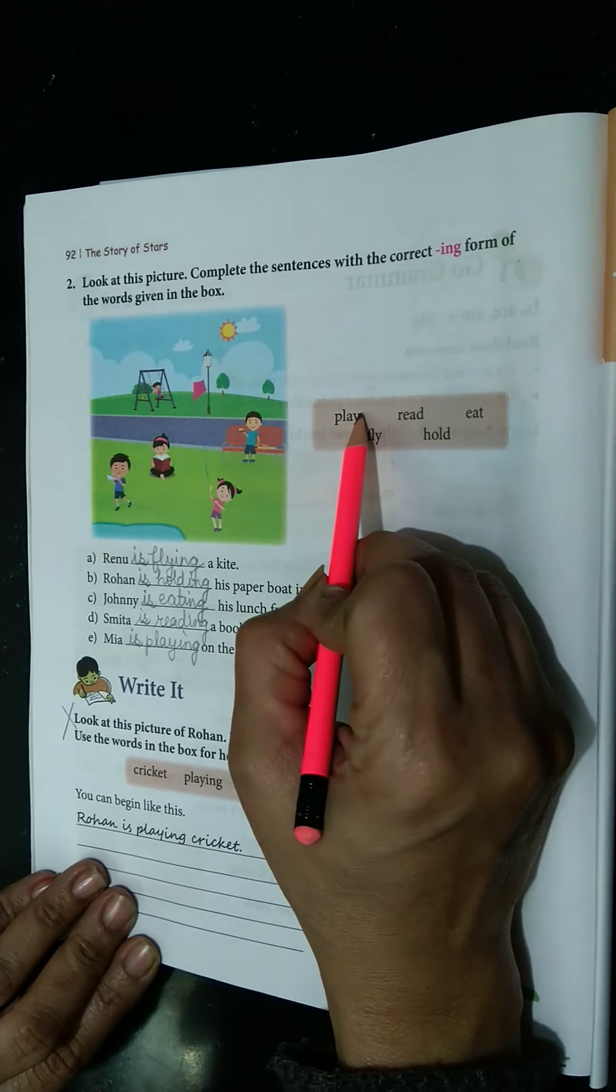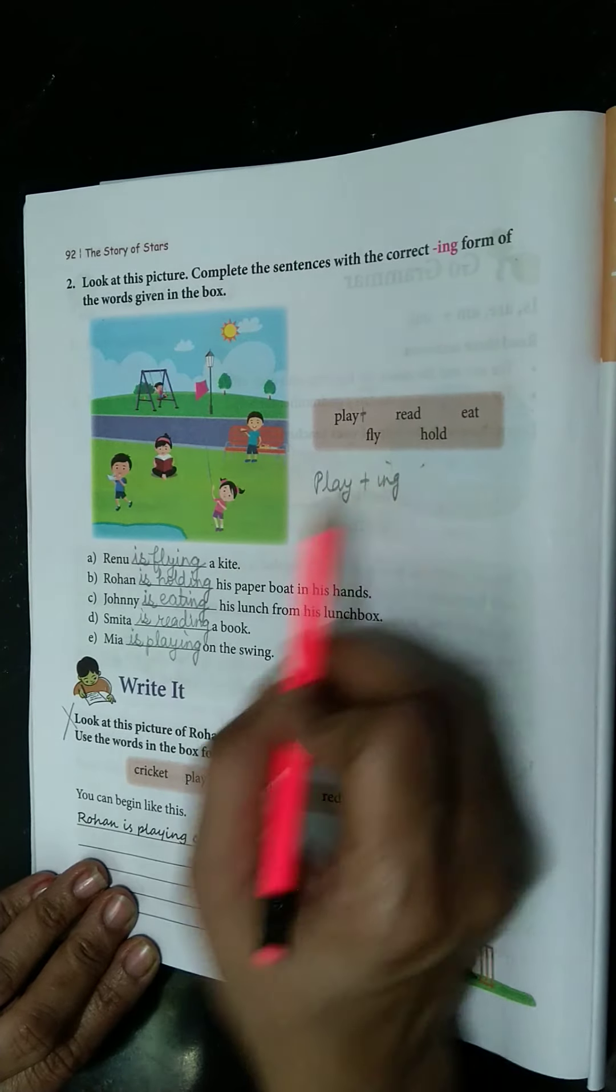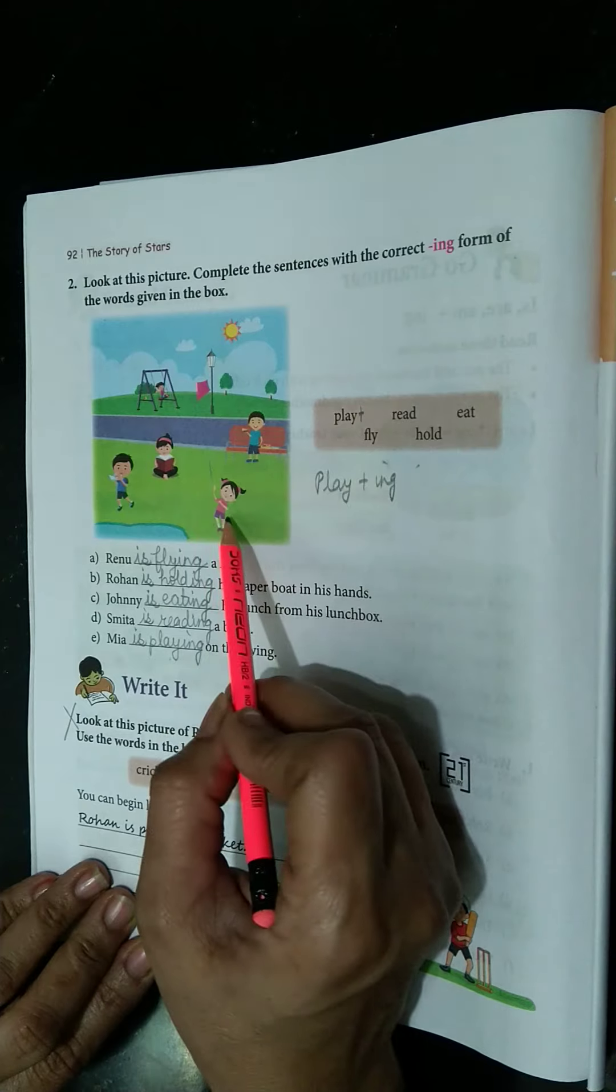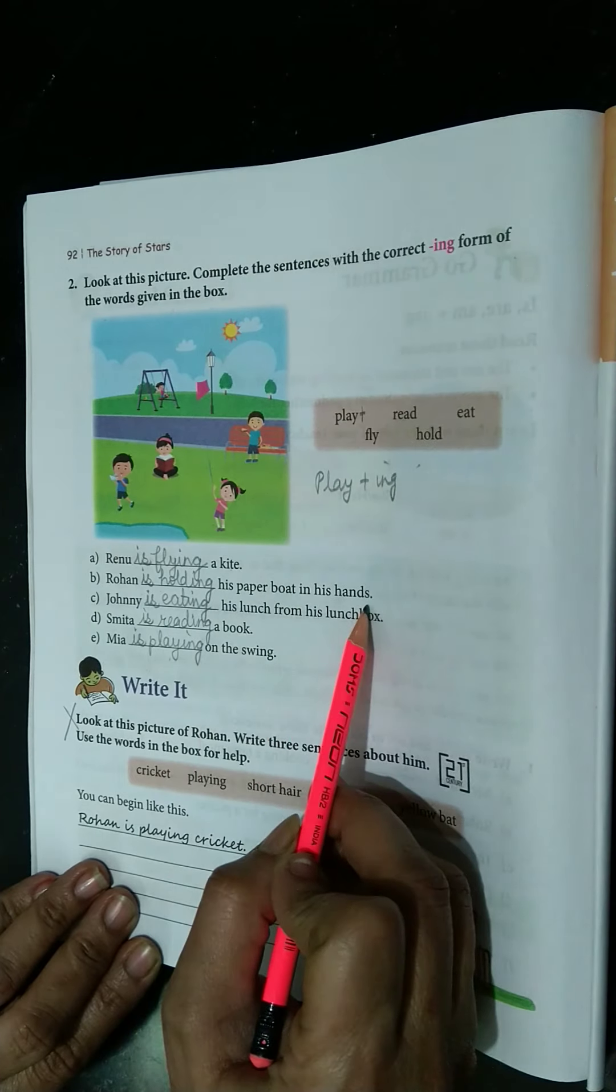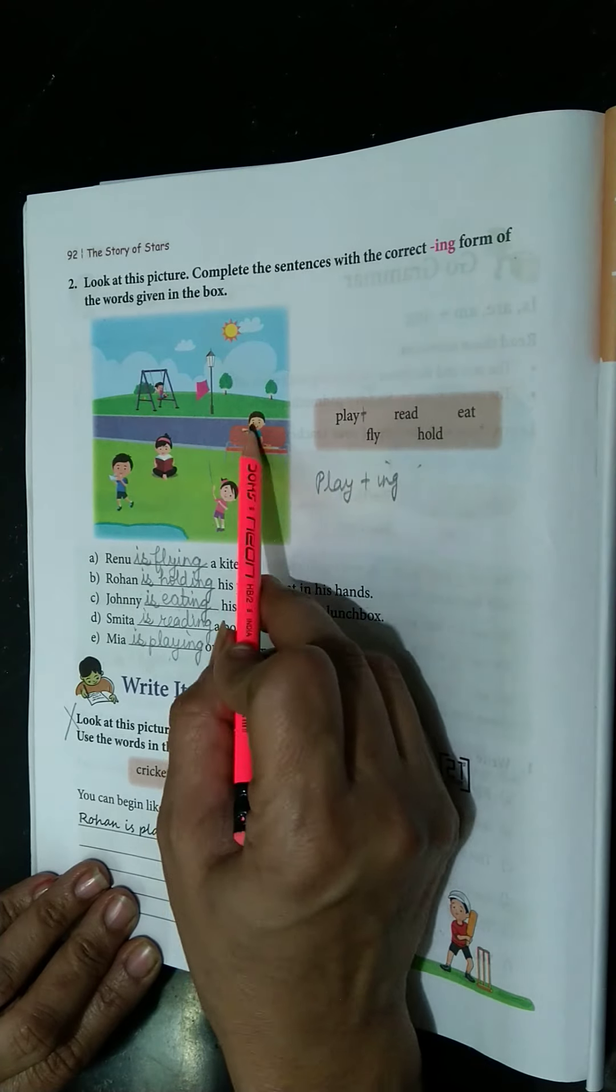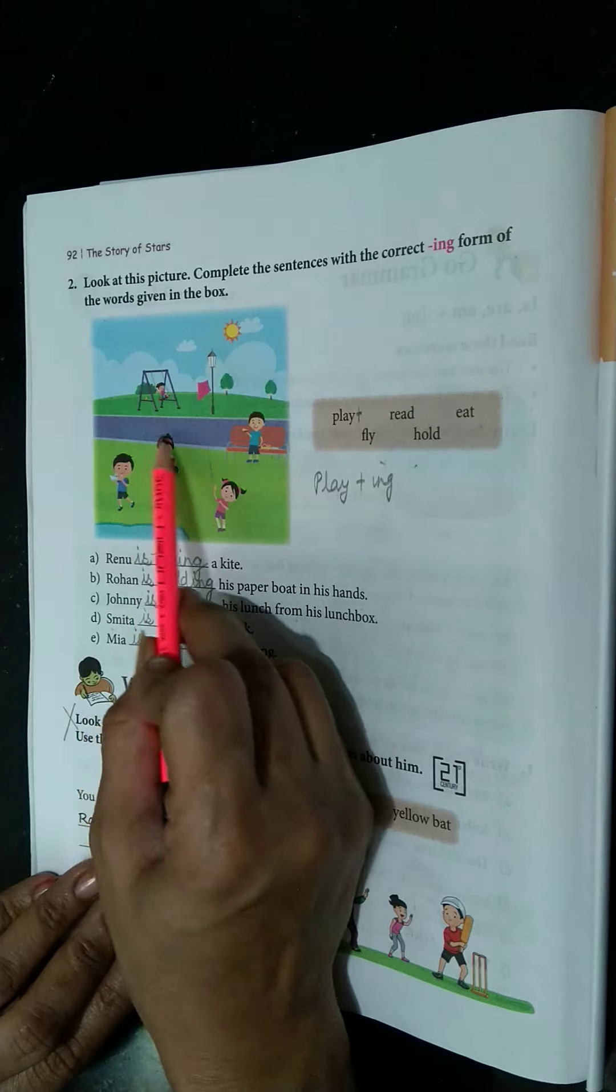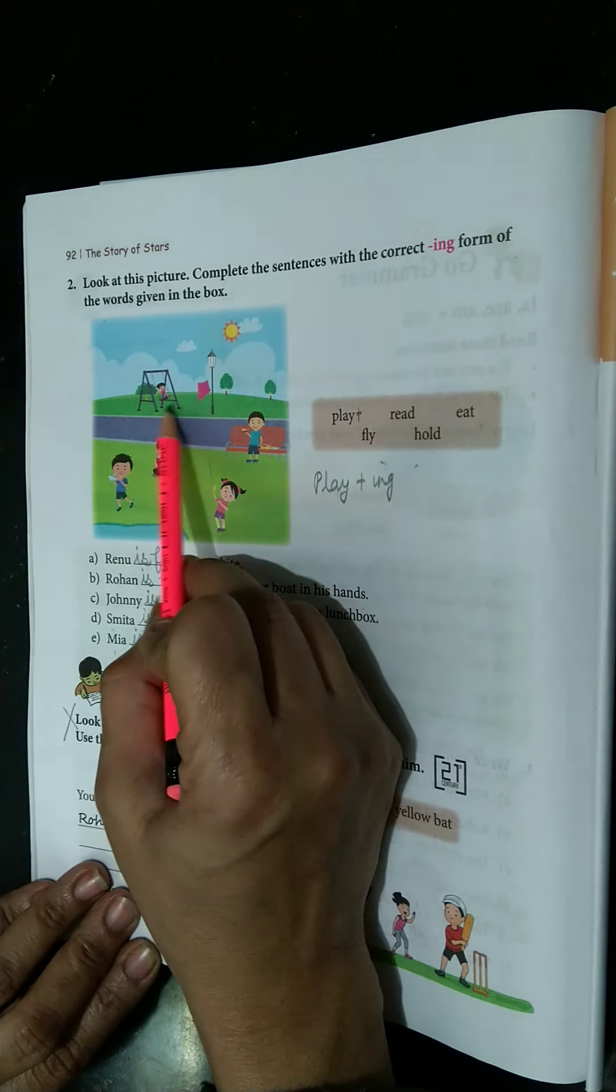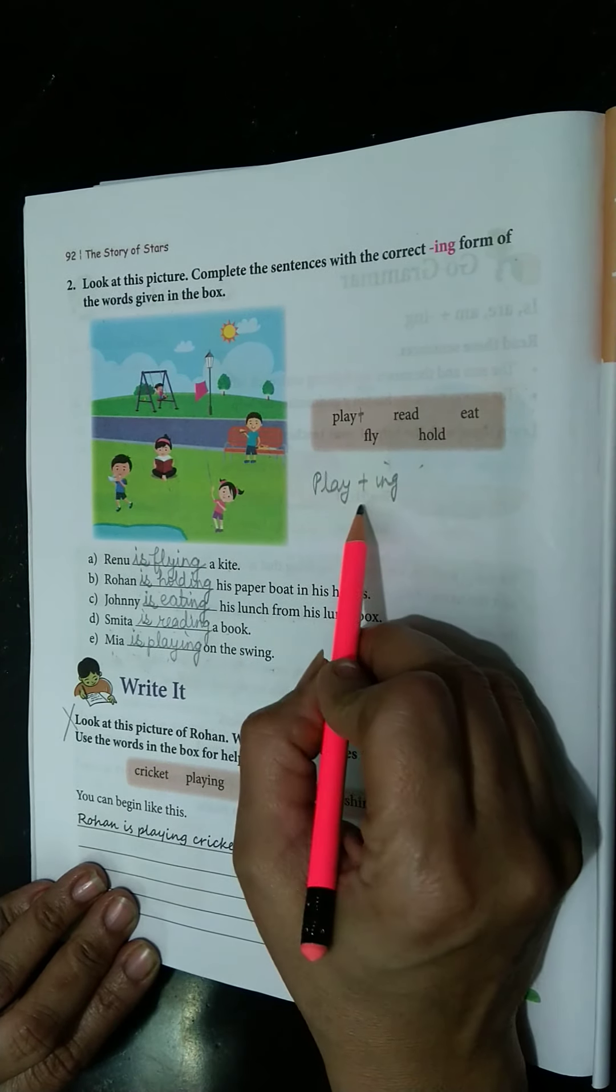And in this we are going to plus ing. Play, with play we will add ing, it will become playing. Correct? Renu is flying a kite. Renu, girl, see the picture? Rohan is holding his paper boat in his hands. Johnny is eating his lunch from his lunch box. Johnny is eating. Samita is reading a book. Samita is sitting in the garden reading a book. Mia is playing on the swing. Mia is playing on the swing. So with all we added ing.